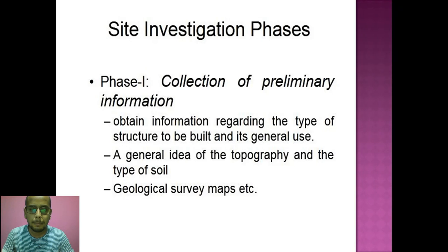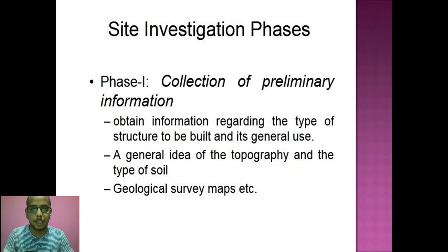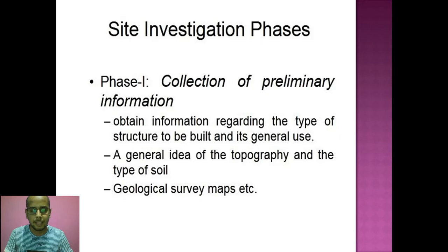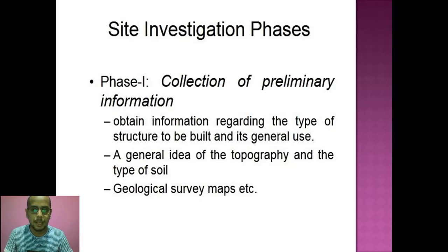In Phase 1 — collection of preliminary information — we obtain information regarding the type of structure to be built and its general use, a general idea of topography and types of soil, and the geological survey map. When we study surveying, we get an idea about topographical maps and geological survey maps. These decide the region's topography, availability of water table, and different things depend upon this geological survey map and topographical map.